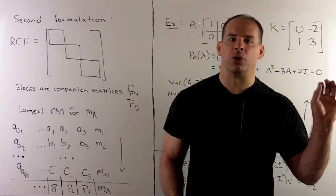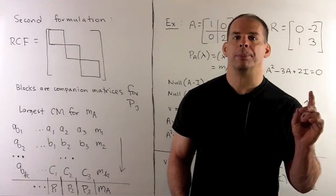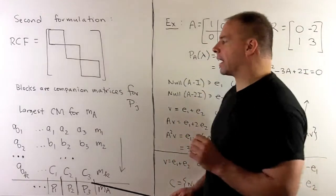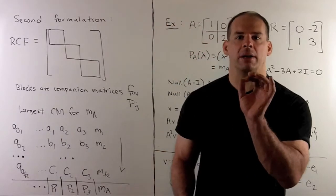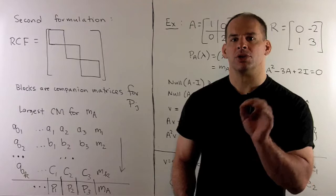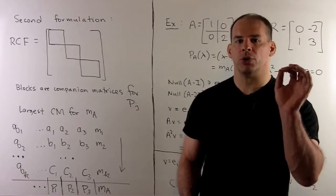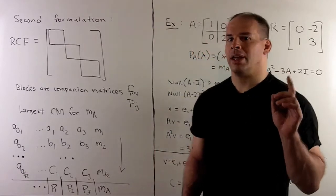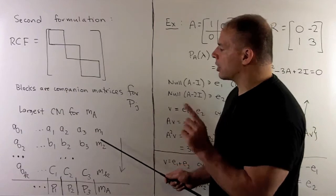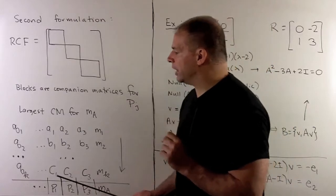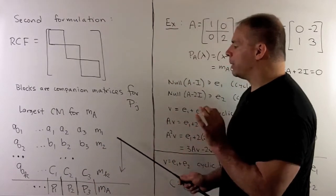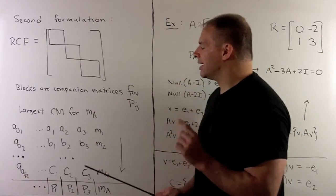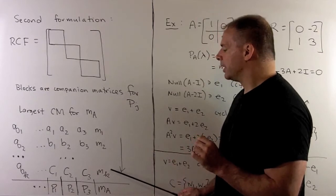p_j divides p_{j+1}, and the largest p by degree is the minimal polynomial for A. To find those p's, we connect to the first formulation. We take each irreducible factor — say q_1 — and take the companion matrices comprising the block for q_1. Each is a companion matrix for q_1 to some power, so we collect all those exponents with multiplicity, arrange them in increasing order. The largest exponent is m_1. We do that for each q, then multiply down each column starting with the largest exponents: q_1^{m_1} times q_2^{m_2} and so on gives the minimal polynomial of A.